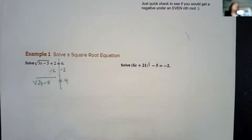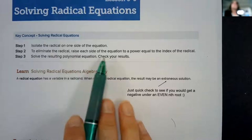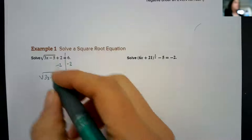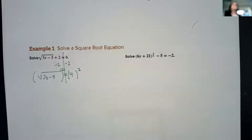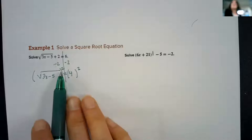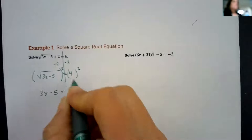Step two says to eliminate the radical. Raise each side of the equation to a power equal to the index of the radical. So this one is a square root, that means I'm going to raise each side to a square. If it was a cube root we would raise it to a third power. If it was a fourth root we'd raise it to a fourth power and so on. The exponent cancels out the radical, so we would just have 3x minus 5 equals four squared, which is 16.